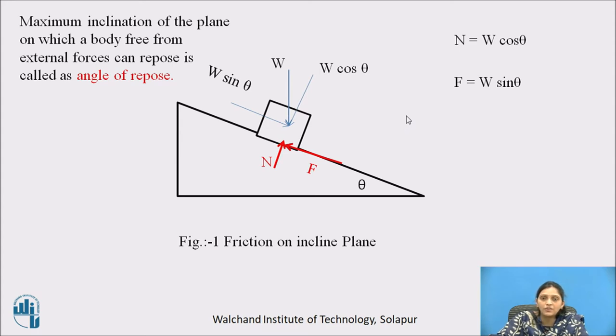We have seen the definition of coefficient of friction in the previous session: F and N bear a constant ratio called mu. So F by N equals W sin theta divided by W cos theta. W gets cancelled, and sin theta divided by cos theta equals tan theta. So mu equals tan theta equals F upon N. This is the coefficient of friction.